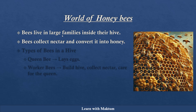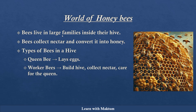When I say bees, there are different types of bees in the hive. The first one is a queen bee. The work of the queen bee is to lay the eggs. Another type of bee is the worker bee, which does the majority of the work like building the hive, collecting the nectar, and taking care of the queen. So bees live in large families inside the hive, collect nectar, and convert it into honey. The two types of bees are the queen bee and the worker bee.